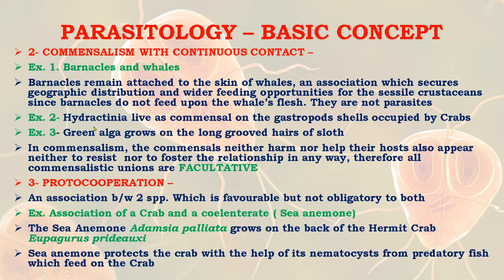Other examples of commensalism with continuous contact include Hydractinia, a cnidarian that lives as a commensal on the gastropod shell occupied by a crab, and green algae that grow on the long grooved hairs of the sloth. In commensalism, the commensals neither harm nor help their host. All commensalistic unions are facultative.